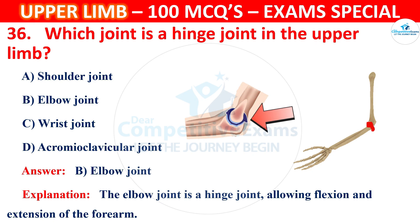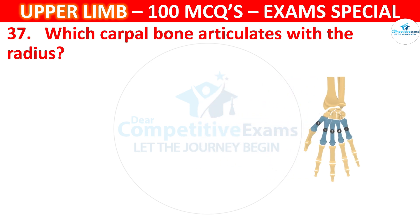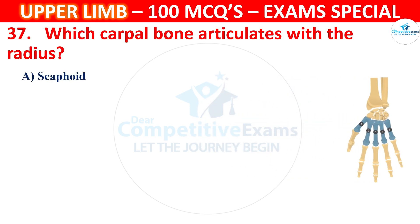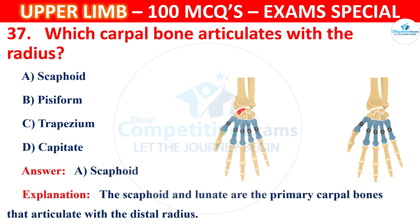Question number 37: Which carpal bone articulates with the radius? Options: scaphoid, pisiform, trapezium, or capitate. The correct answer is A, scaphoid. The scaphoid and lunate are the primary carpal bones that articulate with the distal radius.